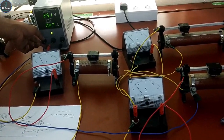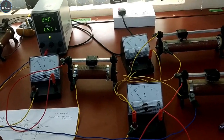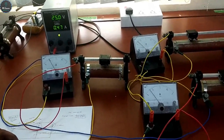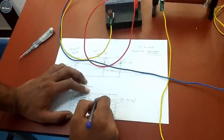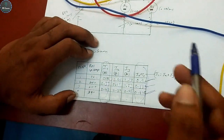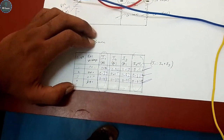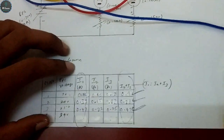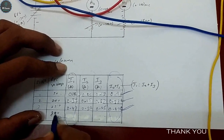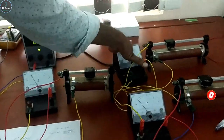Now I will set 25 volts. Ammeter 1 reads 0.47 A. I2 reads 0.22 A and I3 reads 0.25 A, which gives a sum of 0.47. So ammeter 1 reading is equal to the addition of ammeter 2 and ammeter 3 readings. You can similarly do it for 30 volts and you will get the same result. This is the verification of KCL — when ammeter 1 reading equals the addition of the other two ammeter readings, KCL is verified.